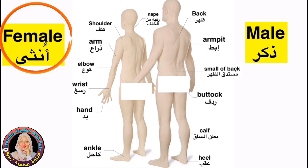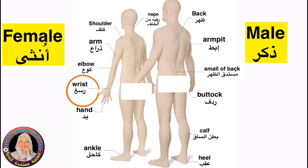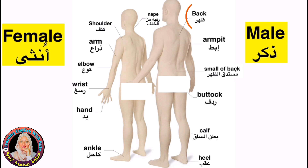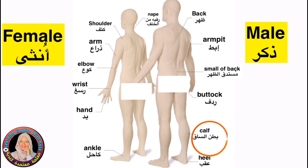You have a female — the woman — and a male — the man. Shoulder, nape, arm, elbow, wrist, hand, ankle, back, armpit, small of back, buttock, butt, calf, heel.